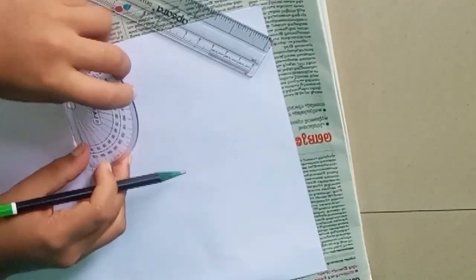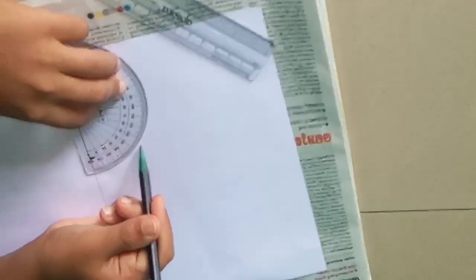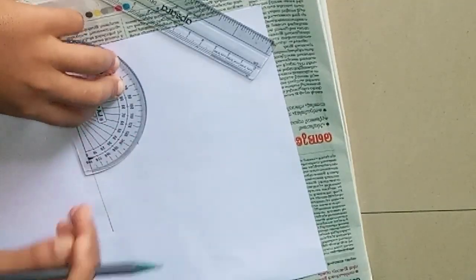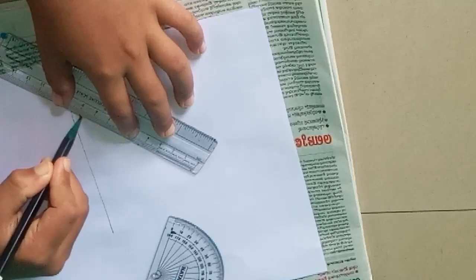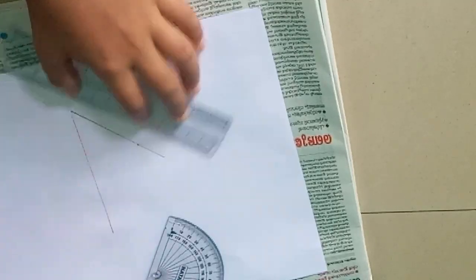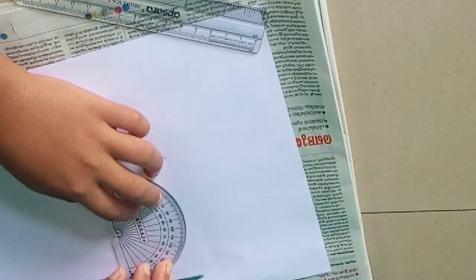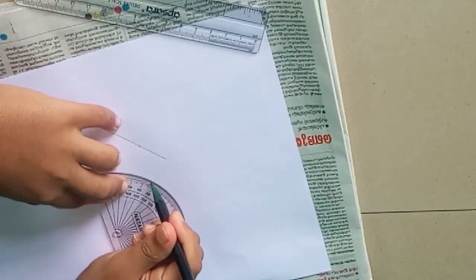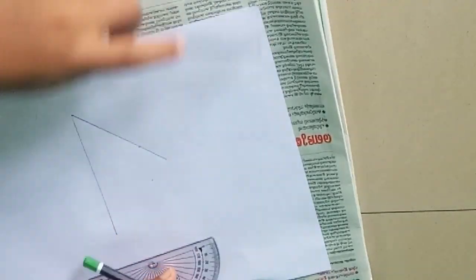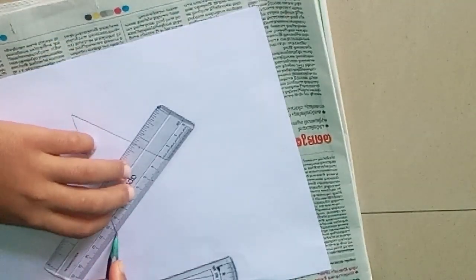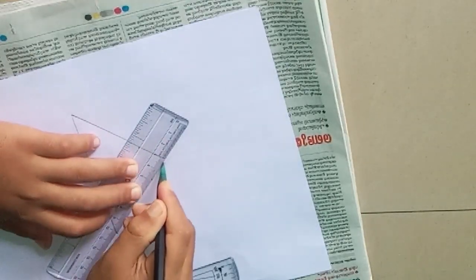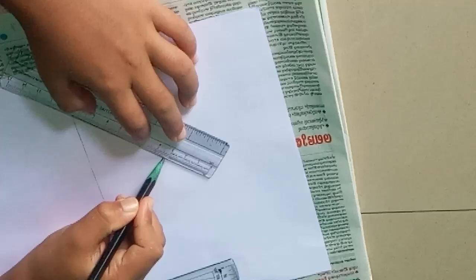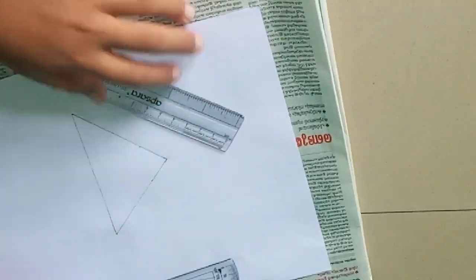Step 2: Take a protractor and place it at the end of the line and mark 45 degrees on the protractor and join the mark to the line. Then place the protractor on the other endpoint of the line and mark 45 degrees and join the mark to the line. Then we will get a triangle.